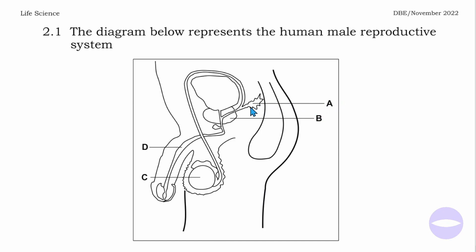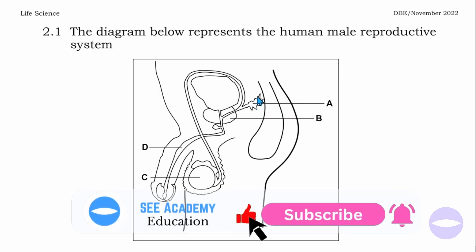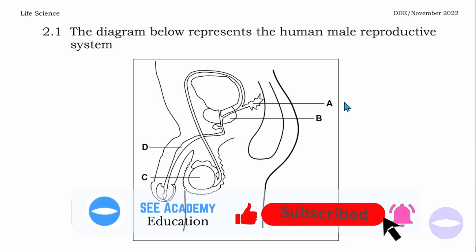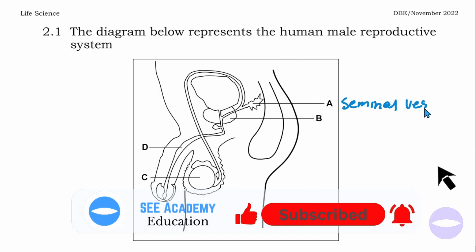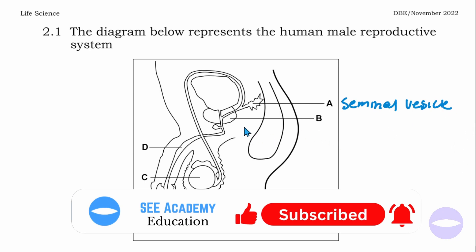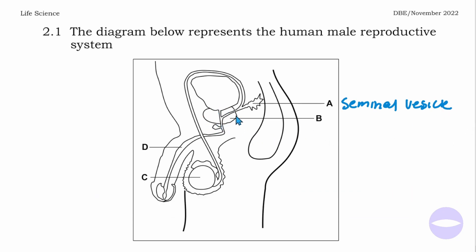Starting with A — it's the seminal vesicle. The seminal vesicle is the tree-like part. And then B is the prostate gland, which is just below the urinary bladder.